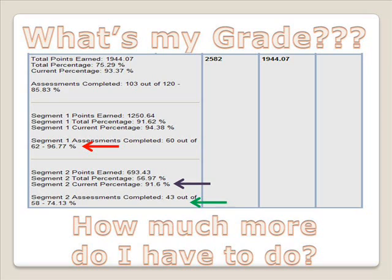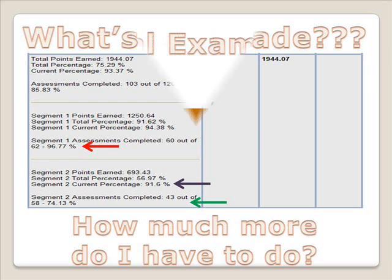Your grade book page is also where you will see your grade. Scroll to the bottom of the page and you will see something like this. This student is working in Segment 2. Her current grade is a 91.6 in the second segment, as indicated by the blue arrow. Keep in mind that you get a separate grade for Segment 1 and for Segment 2. This student made a final grade of 96.77 for Segment 1, as indicated by the red arrow. These grades are not averaged together. This student has done 43 out of 58 assignments in Segment 2, meaning she has 15 more assignments to do, indicated by the green arrow.